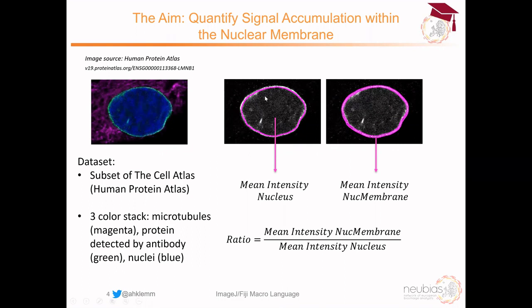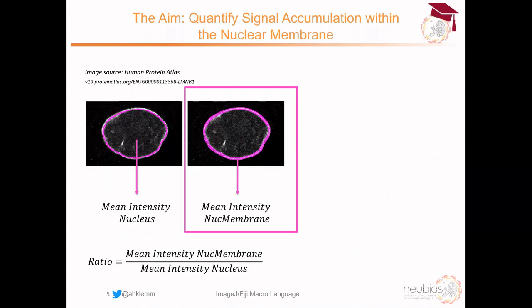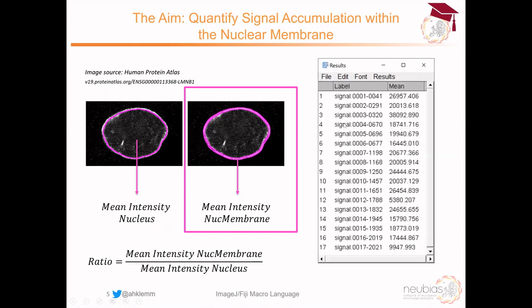What we could do is automatically find where the nucleus is, then automatically find where the nuclear membrane is, then measure the mean intensity in the nucleus and the mean intensity only in the nuclear membrane, and calculate a ratio from these two values. Since this is a course on ImageJ macro writing, we will focus specifically on how to automatically get an outline of the nuclear membrane and how to measure the mean intensity within that selection.